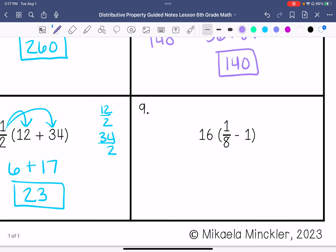All right, last one. 16 times 1 eighth is 16 over 8, which simplifies to 2. And then I have 16 times 1, which is 16, keep, change, change. This would be negative 14.